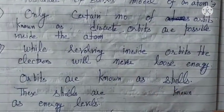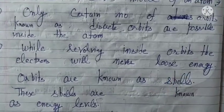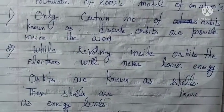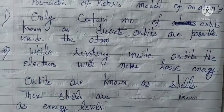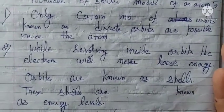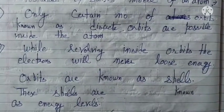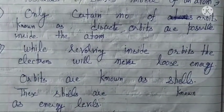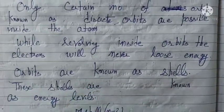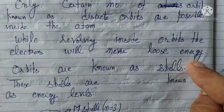Rutherford said an electron is revolving around the nucleus in orbits — yes, that was true. But Bohr said when an electron is revolving in an orbit, it will never lose energy. So the drawback of Rutherford — that the electron will fall into the nucleus when all its energy is exhausted — has been addressed. The electron never loses energy while revolving.